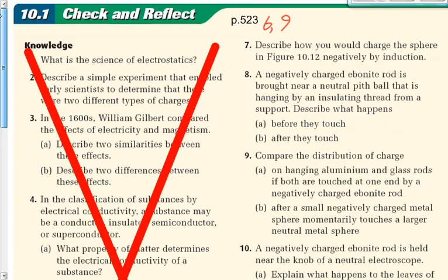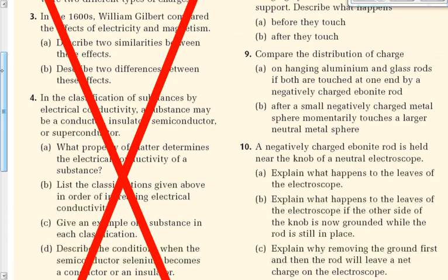The other problem we had to go over was number 9: Compare the distribution of charge on a hanging aluminum rod and a glass rod, if both are touched at one end by a negatively charged ebonite rod. Ebonite is a rubbery, plastic-like material. What is the distribution of charge on each rod?